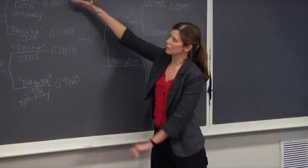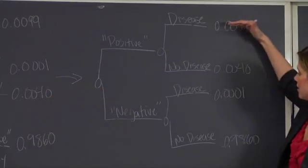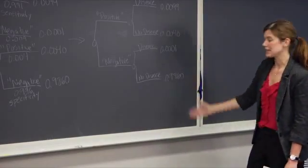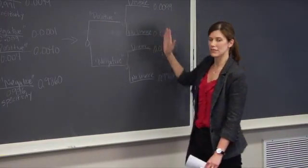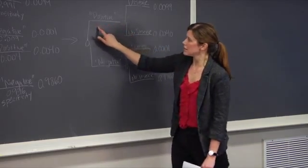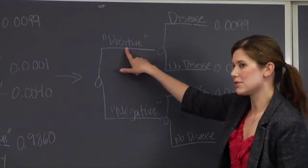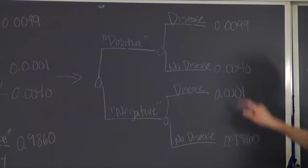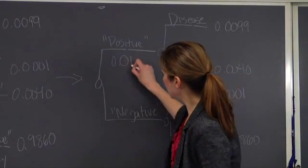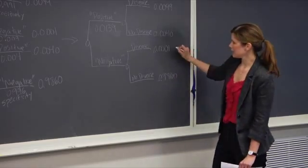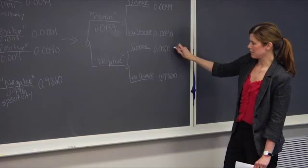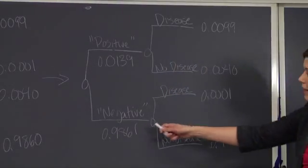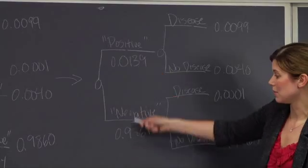We note that in the original tree, the top two joint probabilities stay the same, and the middle two probabilities actually flip. Now we have our joint probabilities at the end of the tree and we want to fill in the rest of the tree moving from left to right. The probability of a positive test result is just the sum of these two numbers: 0.0099 plus 0.0040, which is 0.0139. Similarly, the probability of a negative test is 0.9861. I should double check that these numbers sum to 1, which they do.